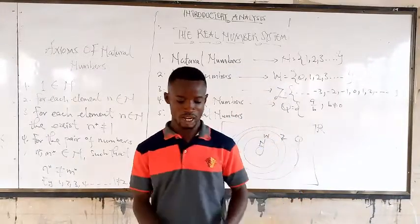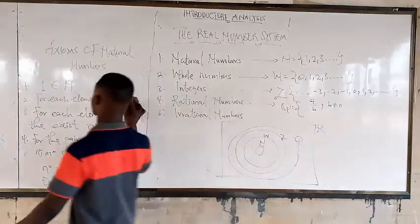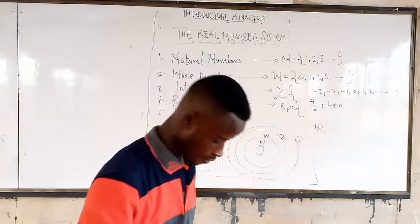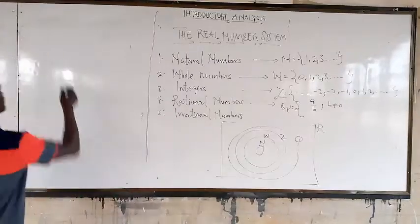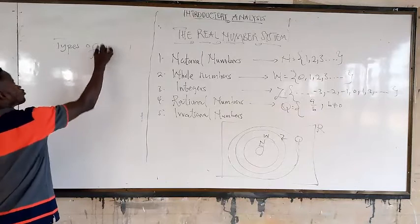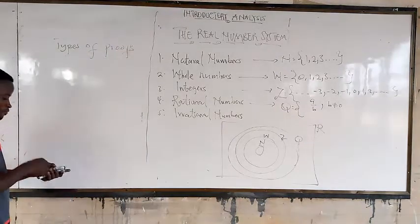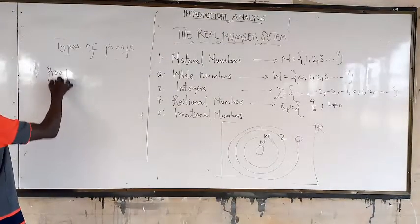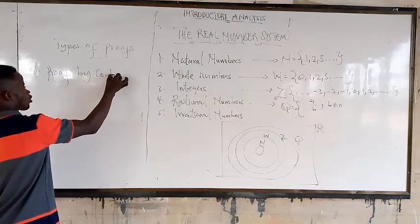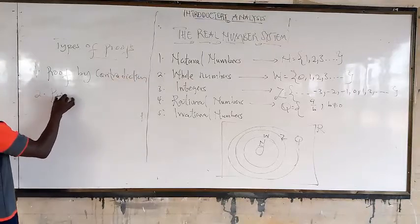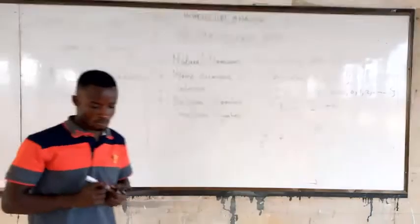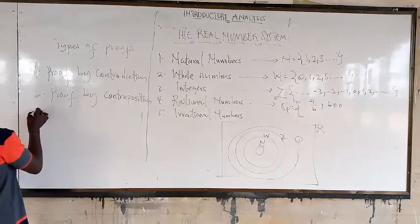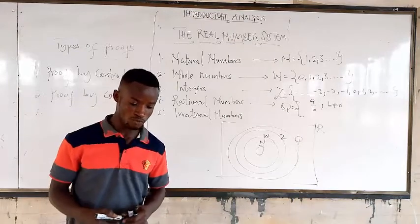That is all for that. Let's look at types of proofs. The first one is proof by contradiction. The second one is proof by contraposition. And the third one is proof by mathematical induction.